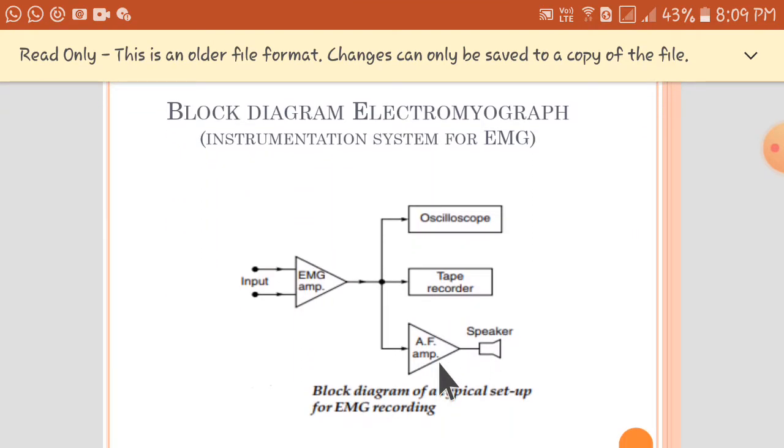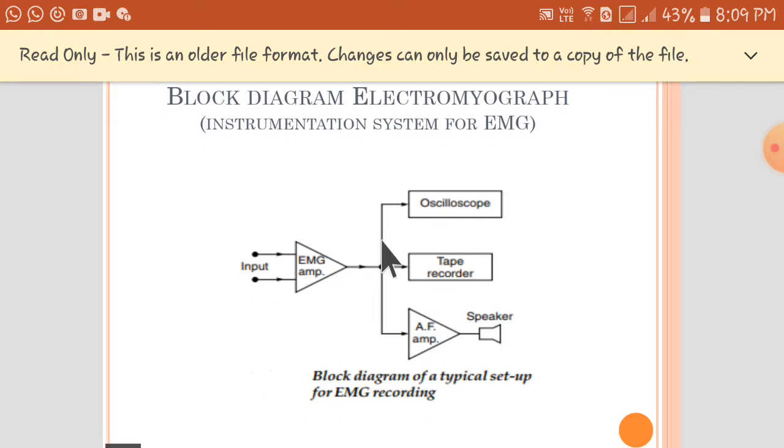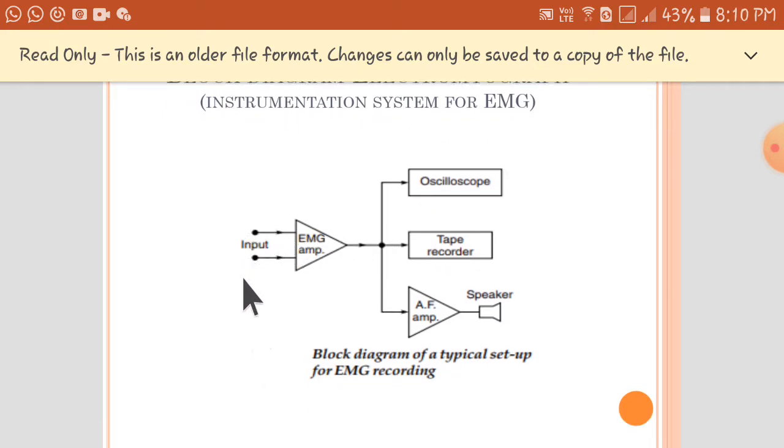Here is a block diagram for an electromyograph. As we have discussed, there will be two electrodes which will be attached to the skin.